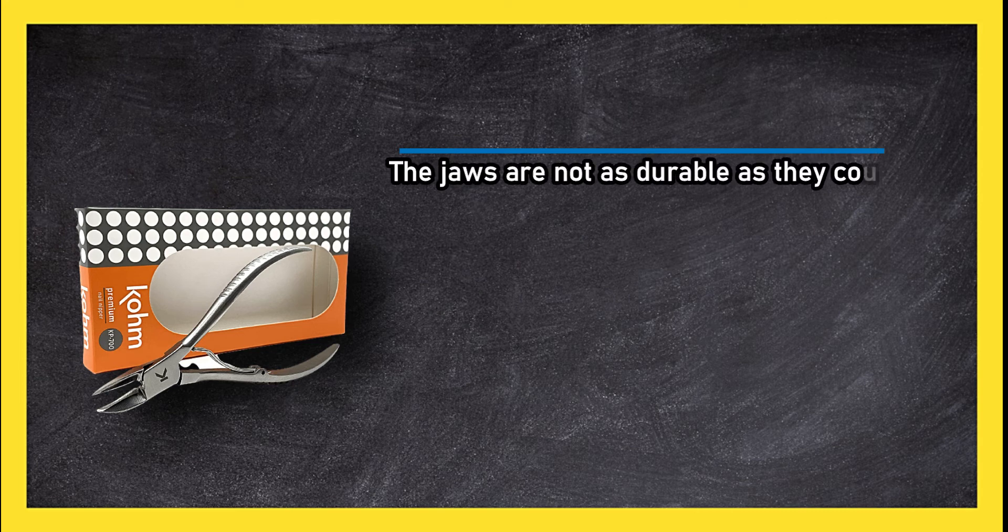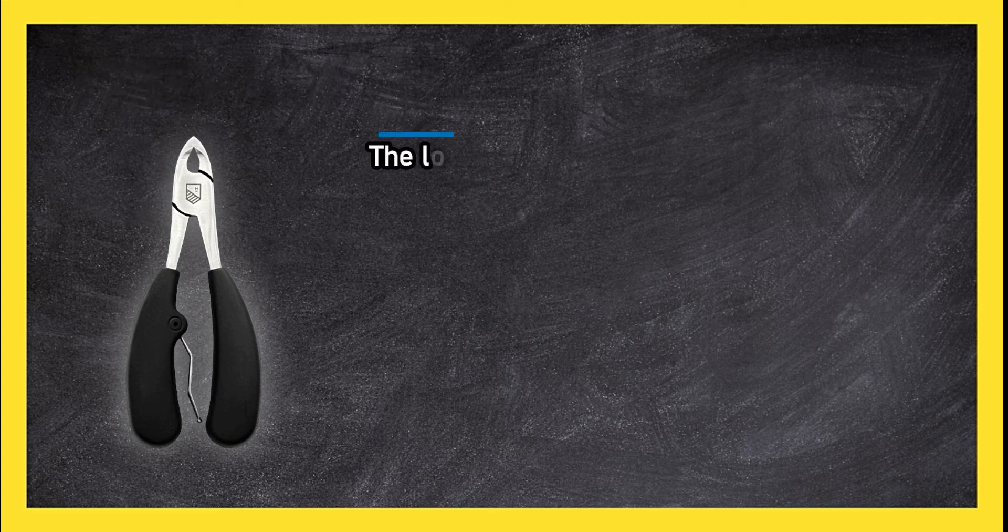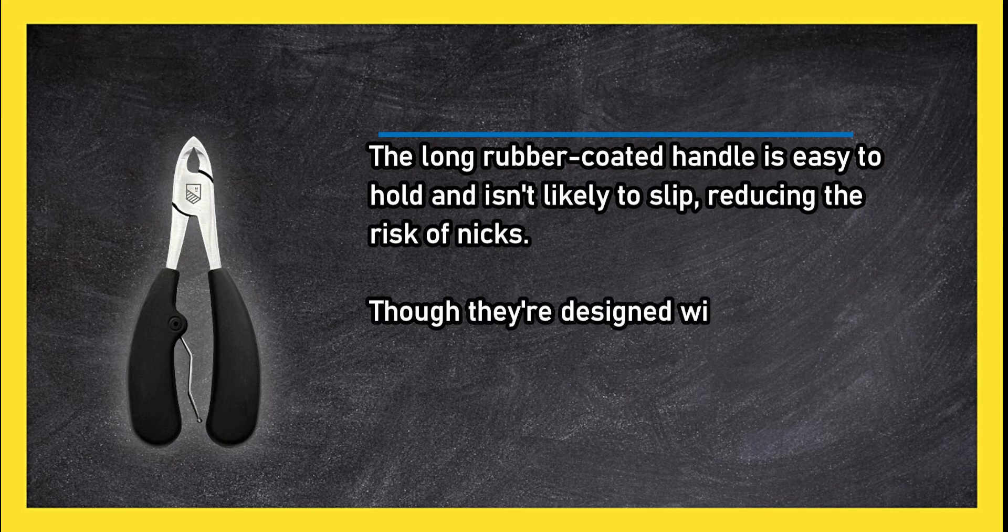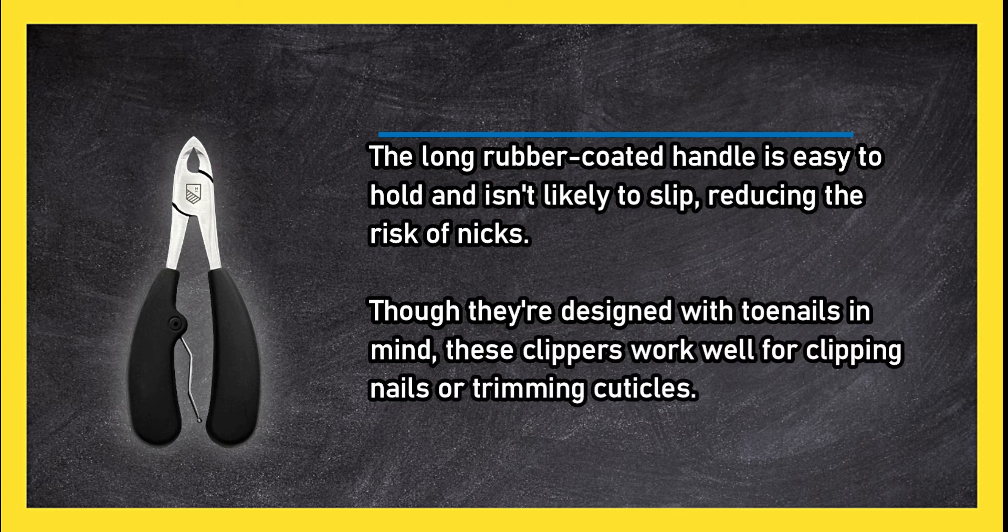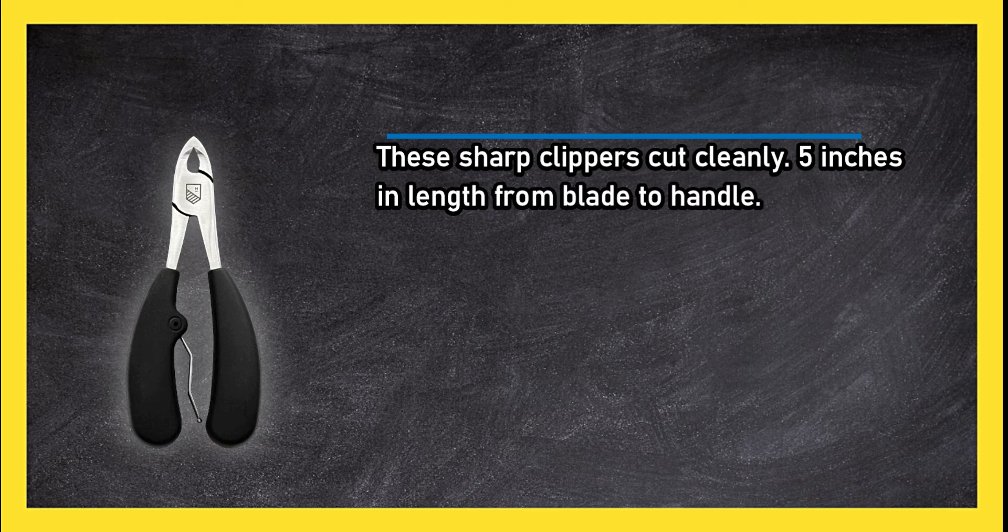At number one, Harperton Nippit. The long rubber-coated handle is easy to hold and isn't likely to slip, reducing the risk of nicks. Though they're designed with toenails in mind, these clippers work well for clipping nails or trimming cuticles. These sharp clippers cut cleanly. Five inches in length from blade to handle.